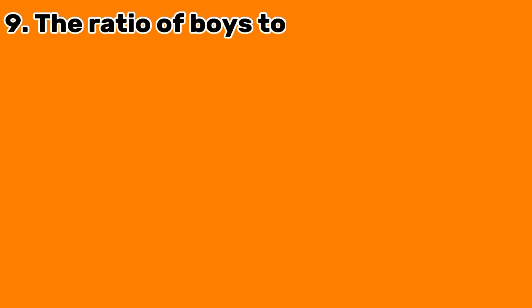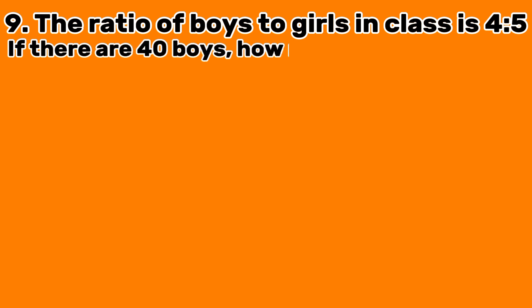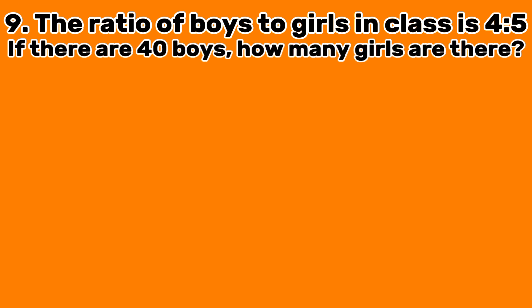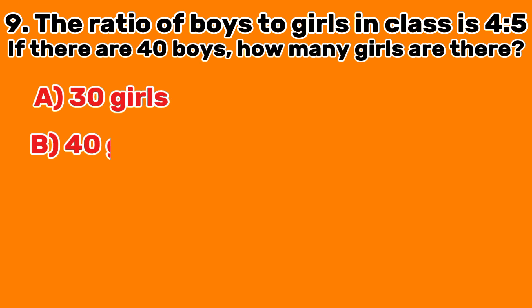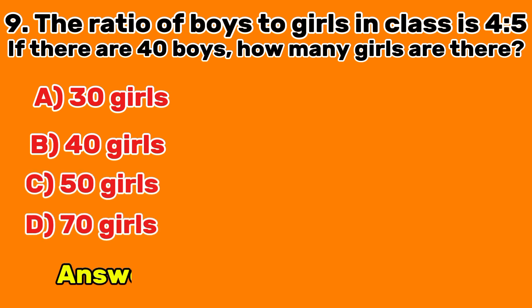Question 9: The ratio of boys to girls in class is 4 to 5. If there are 40 boys, how many girls are there? A. 30 girls. B. 40 girls. C. 50 girls. D. 70 girls. Answer C: 50 girls.